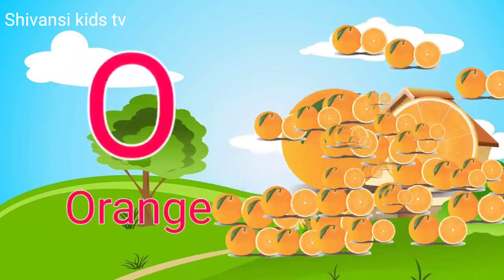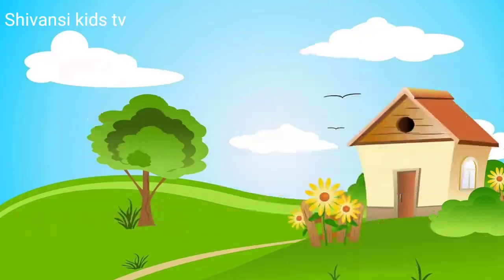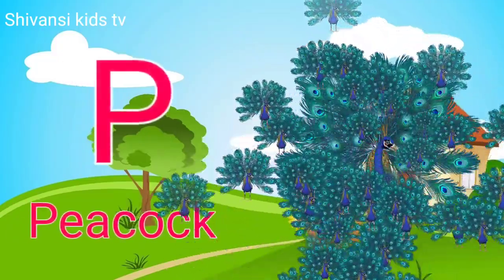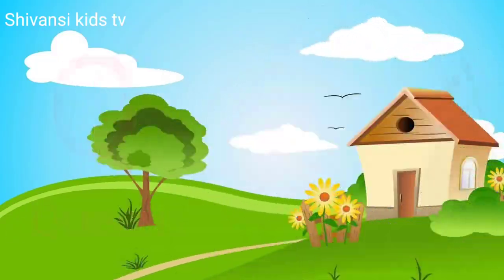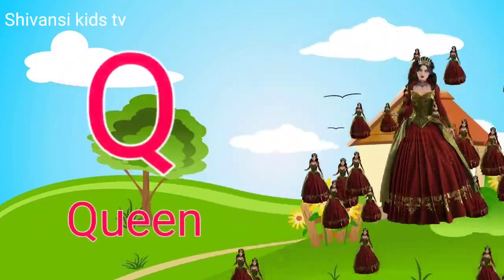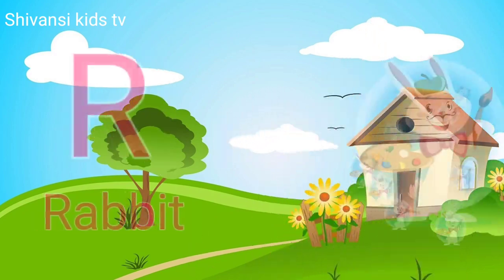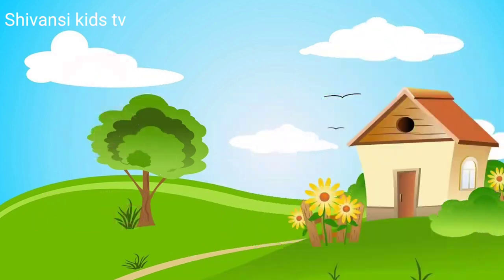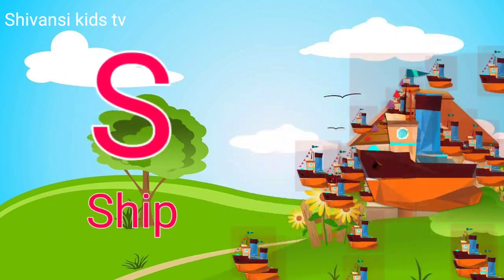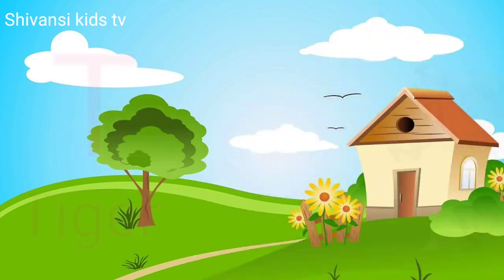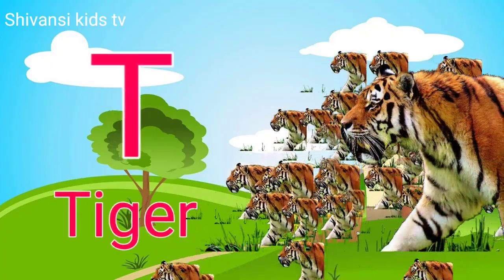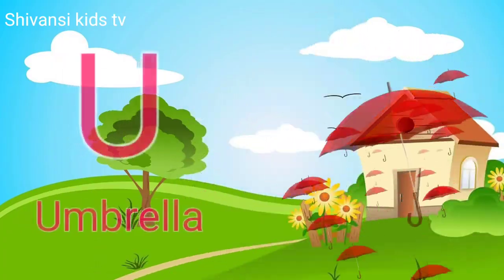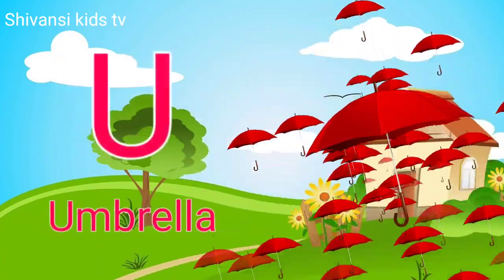O for orange, P for peacock, Q for queen, R for rabbit, S for sheep, T for tiger, U for umbrella.